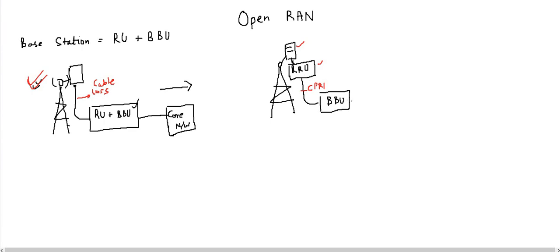This interface is called CPRI. The BBU is connected to your core node via CPRI, and this interface between the BBU and core is known as your backhaul. This is also a traditional way of installing a base station.